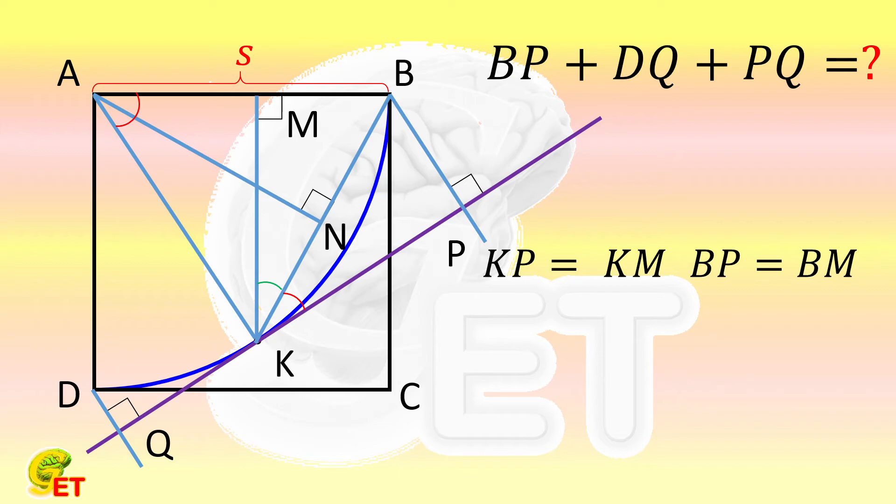In the same way, by plotting KH perpendicular to AD at point H, we can get that KQ is equal to KH, and DQ is equal to DH.